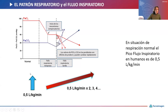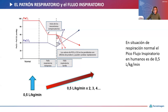El patrón respiratorio normal sostiene un pico flujo inspiratorio de 0.5 litros por kilogramo por minuto en humanos. Frente a una noxa, se inician mecanismos compensatorios: aumento de la frecuencia cardíaca, frecuencia respiratoria, volumen minuto y activación de los músculos respiratorios, intentando sostener la PaO2 y la PaCO2 dentro de niveles normales, pero a costa de un aumento del pico flujo inspiratorio. Si esto continúa en el tiempo, estos mecanismos ya no podrán sostener la oxigenación y CO2, sobreviniendo la claudicación respiratoria inminente.